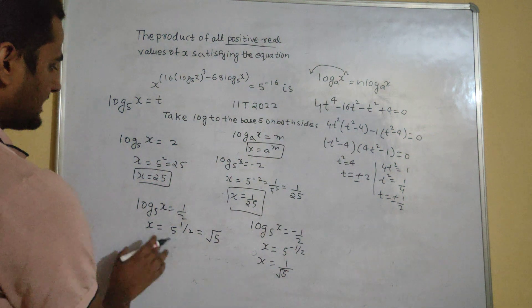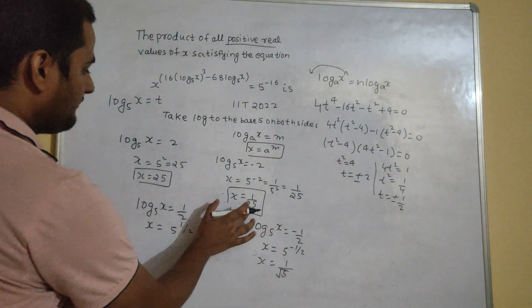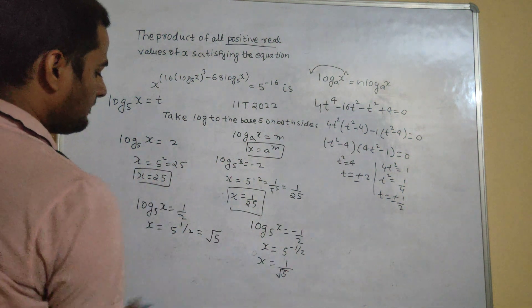So these are the values of x. I have got 4 values: 25, 1 by 25, root 5 and 1 by root 5.